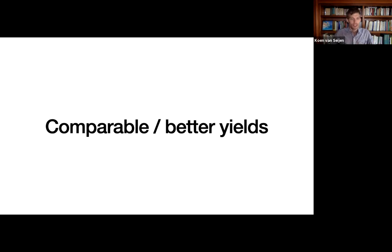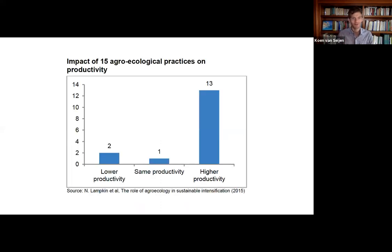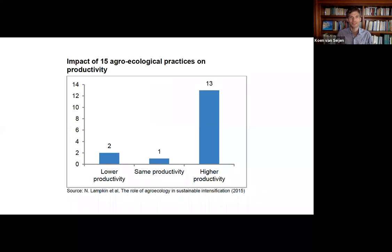Point one: comparable and better yields. This probably shatters some assumptions — we always hear 'organic can't feed the world.' But if you look at agro-ecological practices, which is the umbrella term for a lot of this work, there's actually very interesting data. In most cases you get comparable or better yields, which is quite shocking. Many examples in grain, livestock, agroforestry — like grain and walnuts, or tropical agroforestry — completely outperform any monoculture. So don't let anybody tell you that you cannot produce yield with regenerative agriculture.